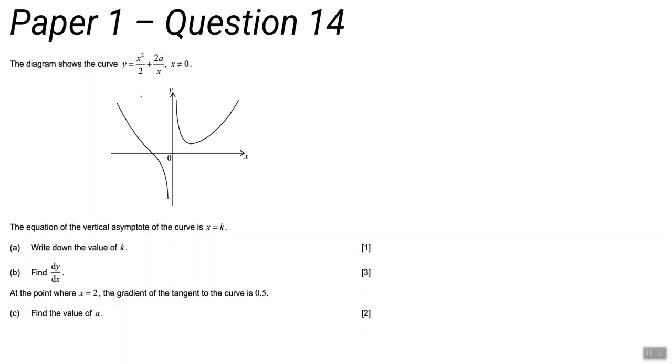Question 14 is about non-linear graphs and then calculus. You're given the equation of a curve and you're told it has an asymptote at x equals k. Asymptotes are lines that the curve doesn't cross because those values are impossible. So what you're looking for is a value of x that the curve cannot take.